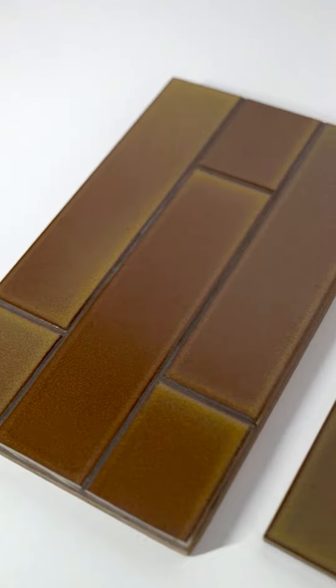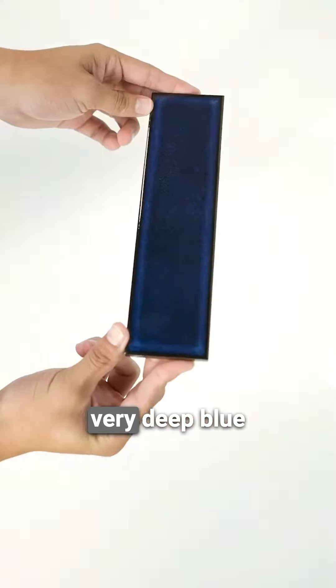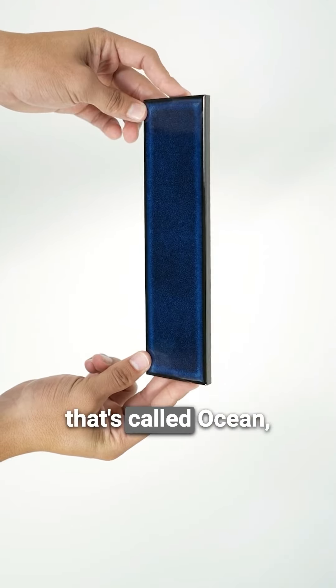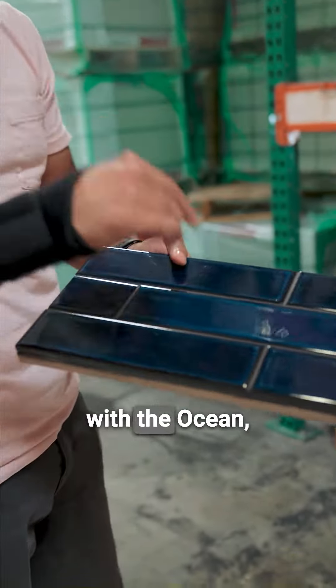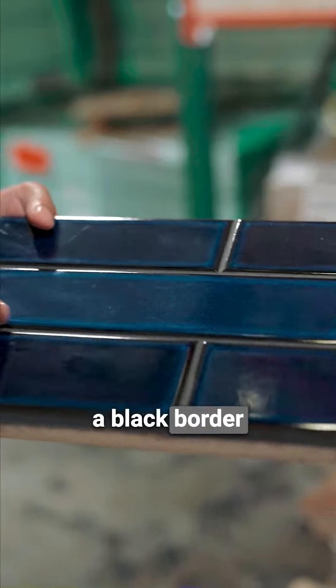It comes in the caramel. We have a very deep blue that's called ocean, and as you can see with the ocean it actually has a black border for the pooling.